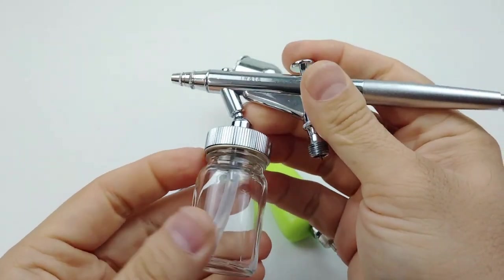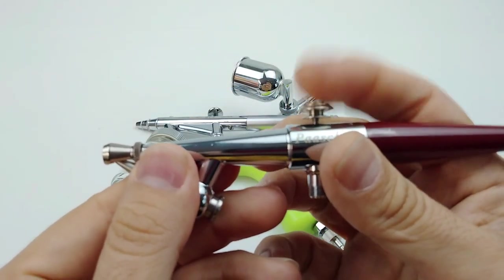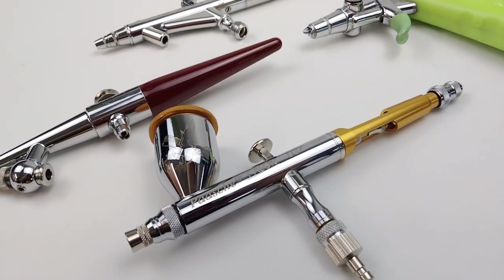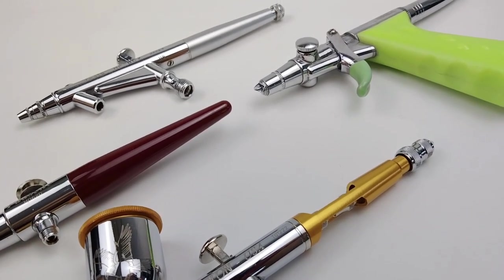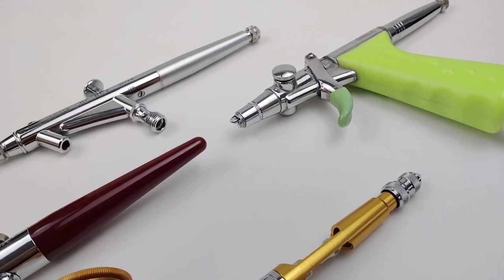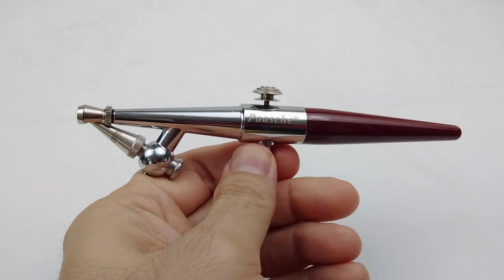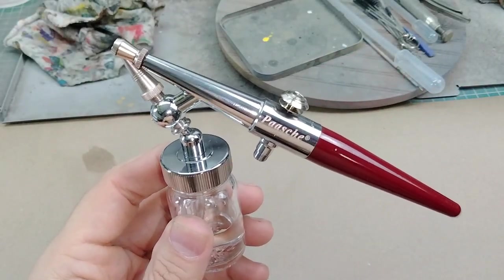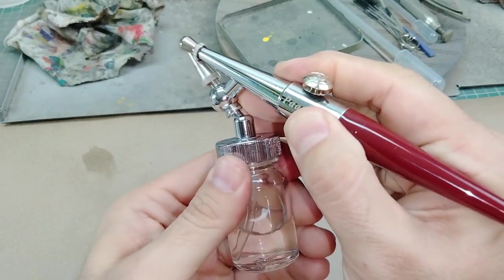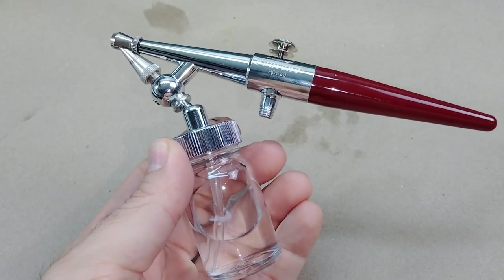With so many airbrushes to choose from, it can be daunting to decide which one to get. I broke down the four most common types of airbrushes, starting with the single action siphon feed airbrush. One of the best-known workhorses in this type of setup is the Paasche H. This airbrush seems like it's been around forever and was my first airbrush.